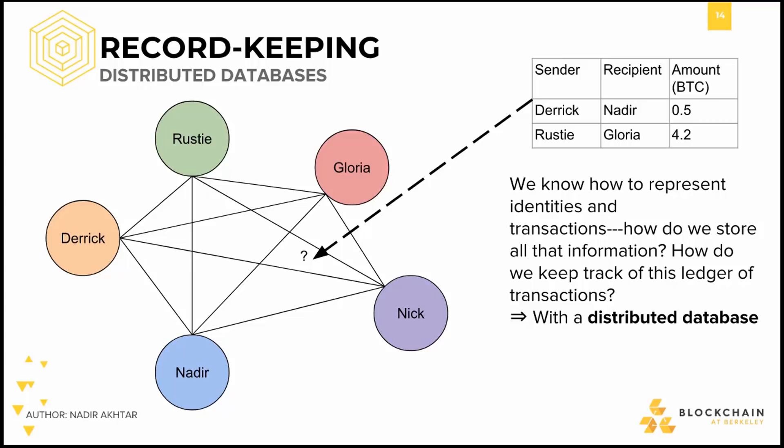Consider the diagram on the left side. Letters represent our network, which includes five entities. Each of these circles represents an identity: Me, Rusty in green on top, Gloria in red on the top right, Nick in purple on the bottom right, Nadir in blue on the bottom left, and Derek in orange on the top left. We are all connected to one another on this network, as is apparent by the straight edges connecting each circle.